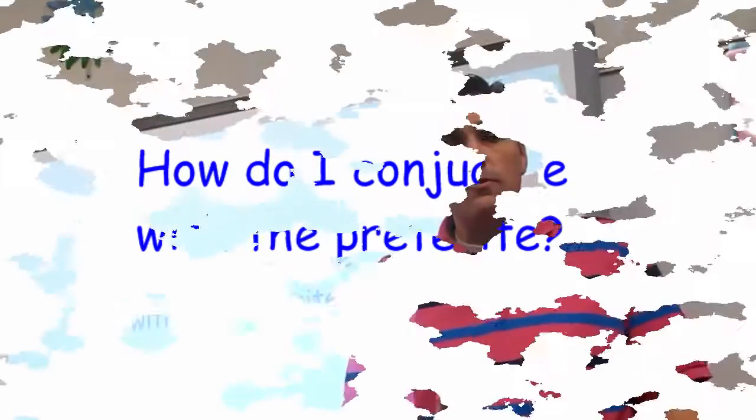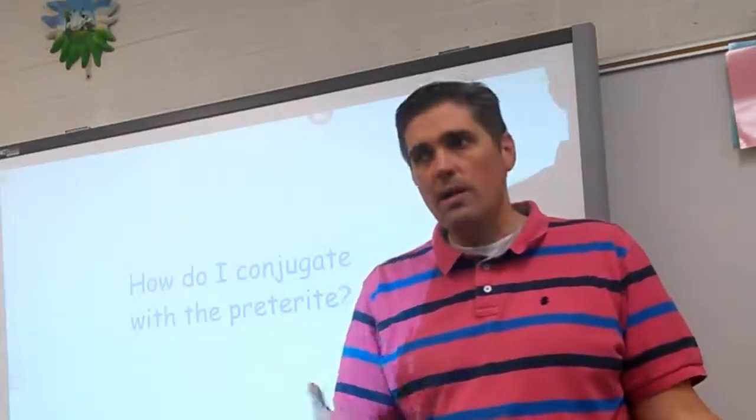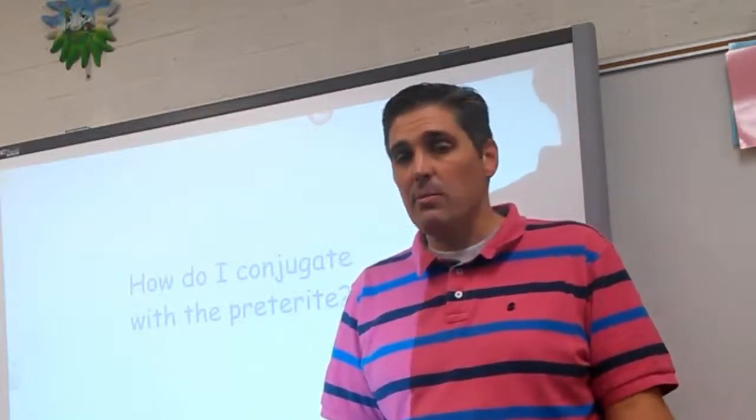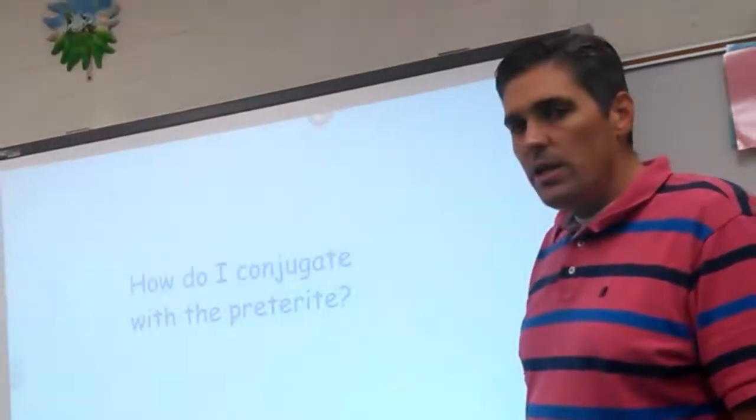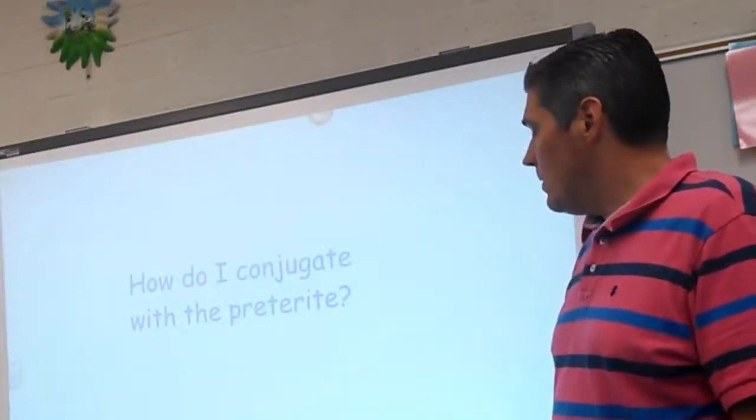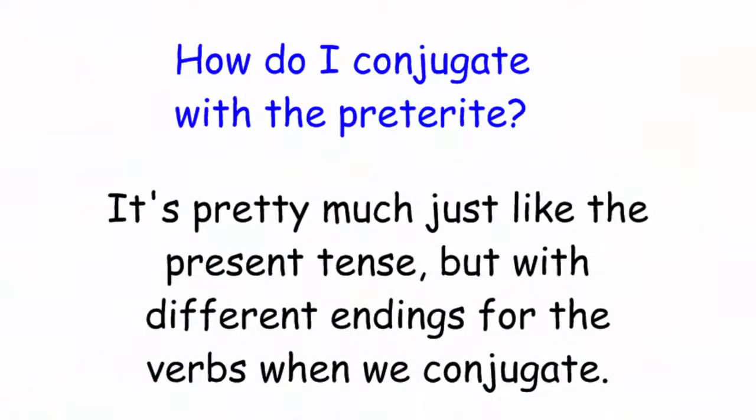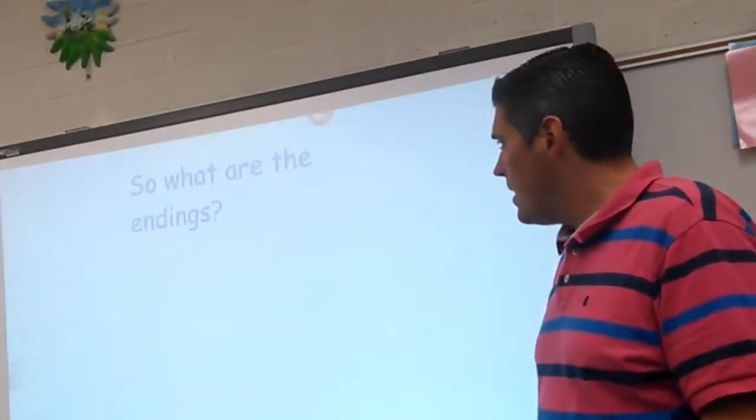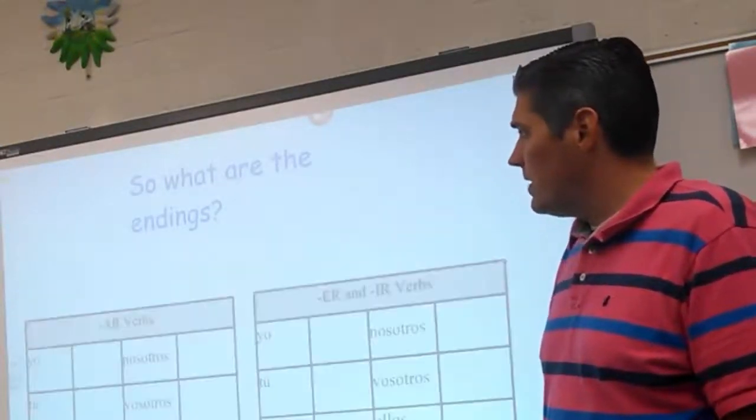So how do you conjugate in the preterite? What's the difference between present tense? O, as, a, amos, an. E, es, e, emos, en. O, es, e, imos, en. So how do you conjugate in the past tense as opposed to this present tense that we've been doing for so long? Well, it's pretty much just like the present tense, but we just have a different set of endings. Instead of that o, as, a, we're going to change the endings. So what are those endings? How are they going to look, what are they going to look like? Let's take a look first at A-R verbs.